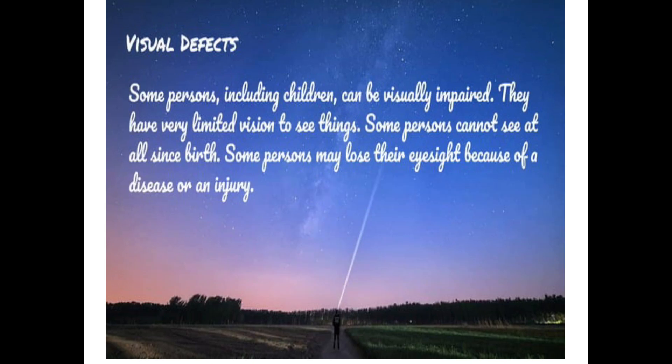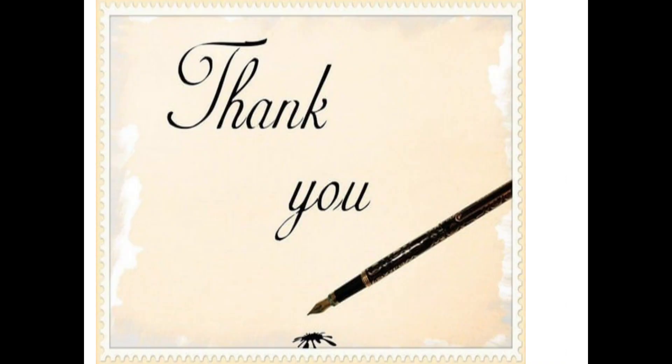Now there are some visual defects. Some persons including children can be visually impaired. They have very limited vision to see things. Some persons cannot see at all since birth. Some persons may lose their eyesight because of a disease or an injury. Thank you.